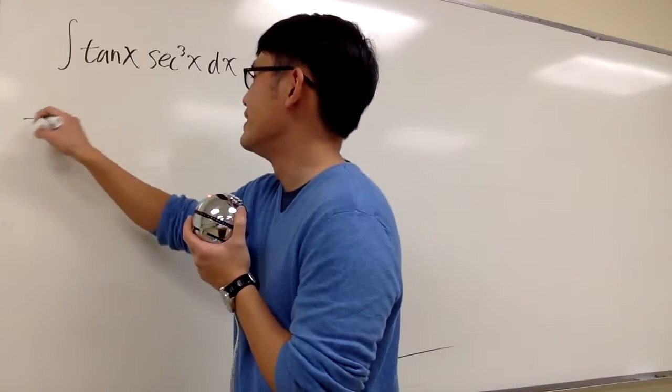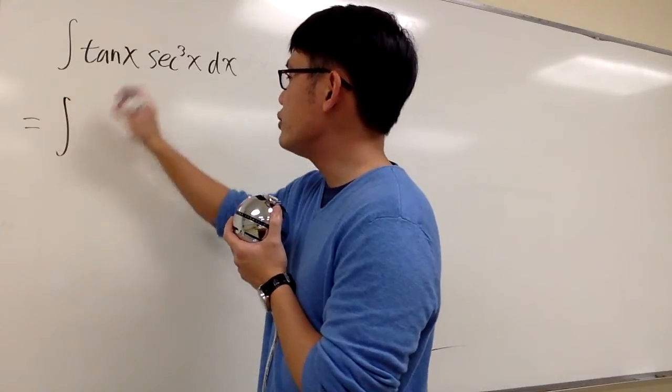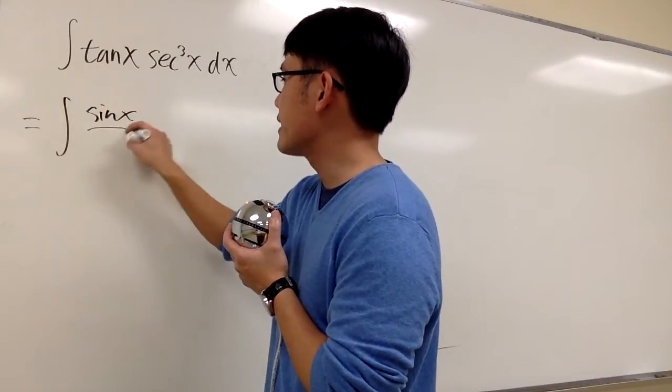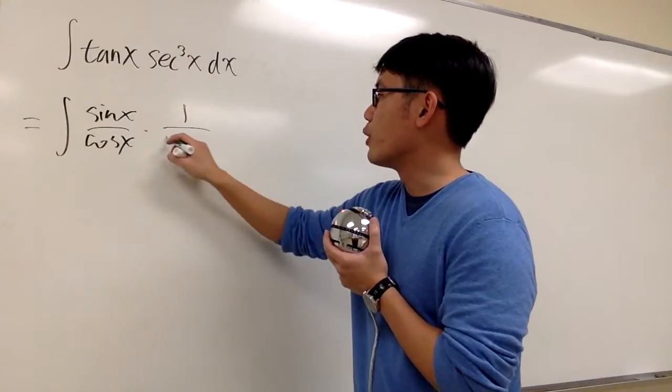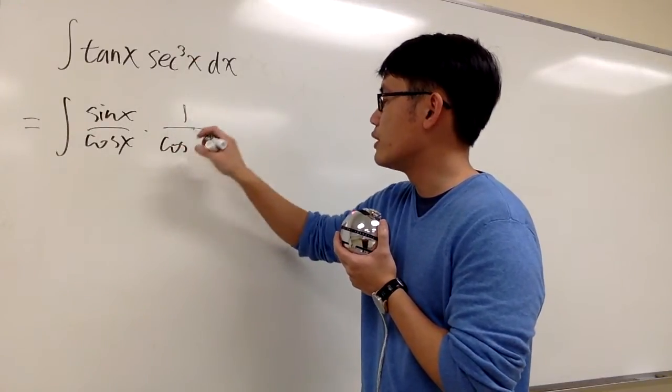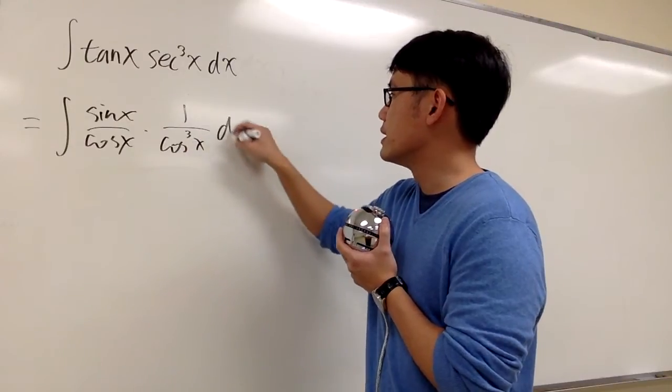And you will be the best. Anyways, this will be the integral of tangent x, is of course the same as sine x over cosine x, and then secant is the same as 1 over cosine, but this is third power, so we also have 1 over cosine to the third power x, dx.